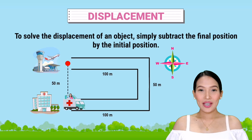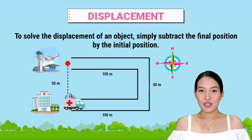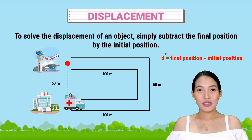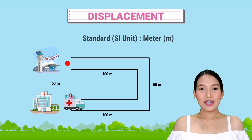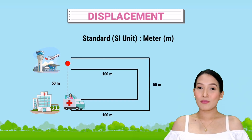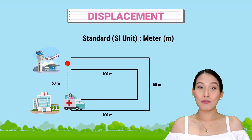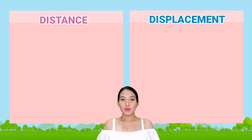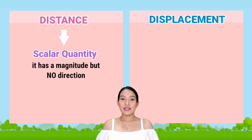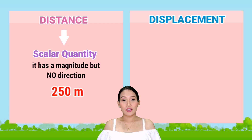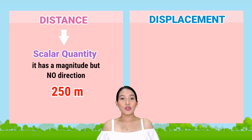Mathematically, we can solve the displacement of an object by subtracting the final position by the initial position — displacement equals final position minus initial position. Just like distance, the standard unit of displacement in the international system of units is also meter. The difference is that when we talk about distance, we consider it as a scalar quantity, meaning it has a single number indicating the magnitude only and no direction. For example, 250 meters is a magnitude for distance.